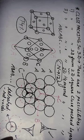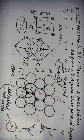This completes the topic of close packing. In 1-2 mark exam questions, questions are generally asked about octahedral voids, tetrahedral voids — for example, the number of octahedral voids equals the number of spheres (N), and tetrahedral voids are double the number of spheres (2N). Such numerical and conceptual questions are important for 1-2 marks. Please study this carefully. Thanks and have a nice day.